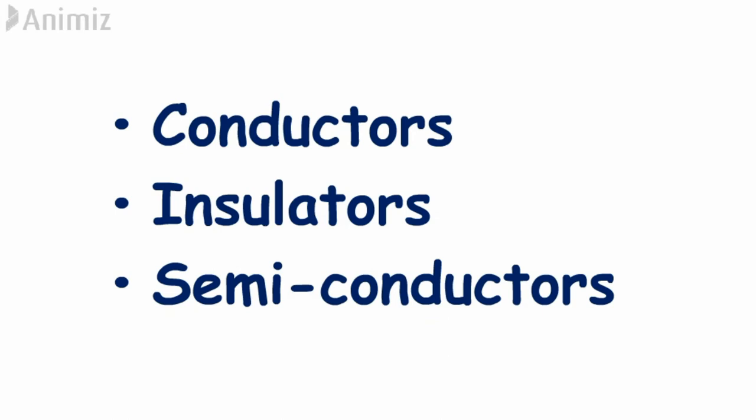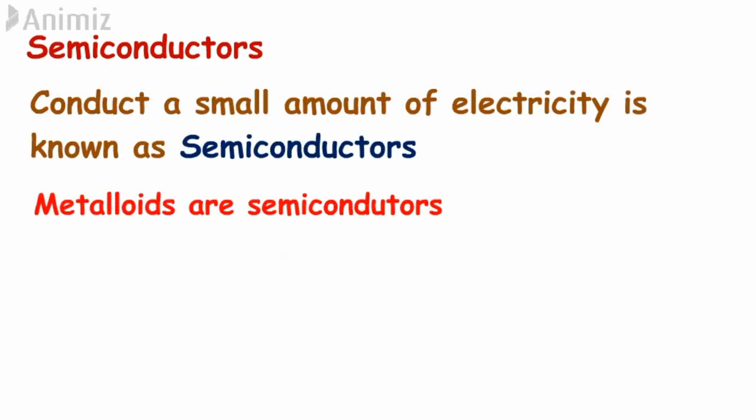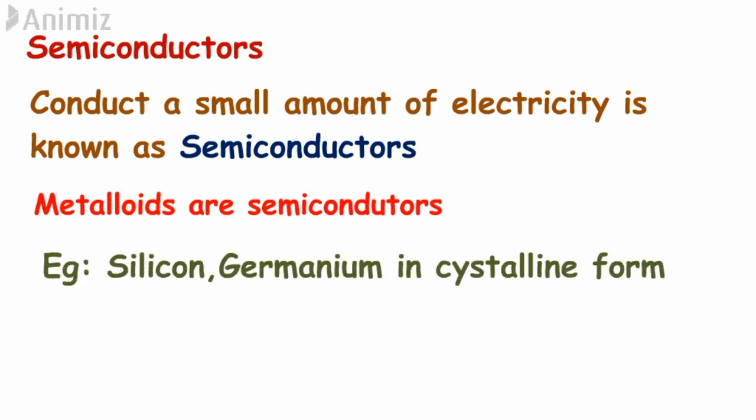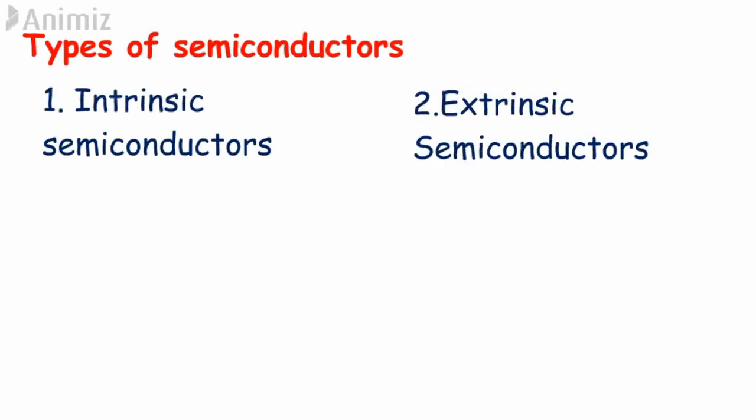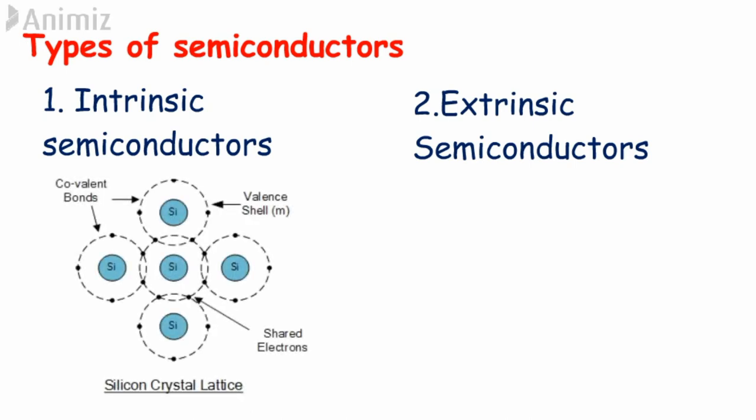So now we have an idea on conductors and insulators. Now let's see what are semiconductors. Semiconductors are materials in between conductors and insulators. So it conducts small amount of electricity. And most commonly used semiconductor material in electronics is silicon. The elements that belong to fourth group in the periodic table show this property in their crystalline form. So metalloids are semiconductors. Depending on the structures, properties and etc., the semiconductors can be divided into two as intrinsic semiconductors and extrinsic semiconductors.